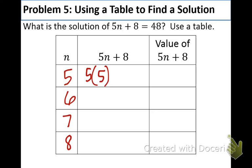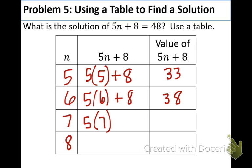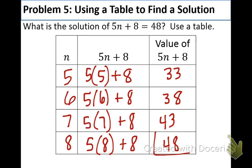And what we're going to do is plug in those numbers for the n. 5 times 5 plus 8. That equals 33. 5 times 6 plus 8. That equals 38. 5 times 7 plus 8 equals 43. And 5 times 8 plus 8 equals 48. And that's exactly what we were looking for. So, the value that made the equation equal to 48 is 8. So, write that down.